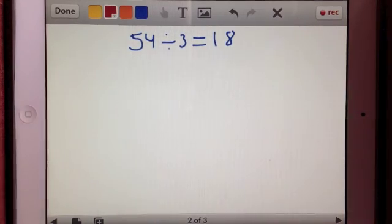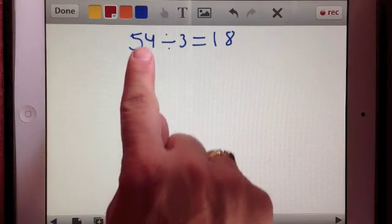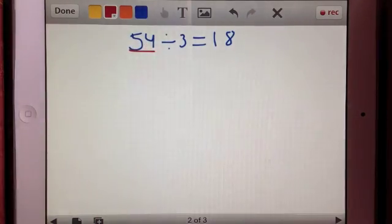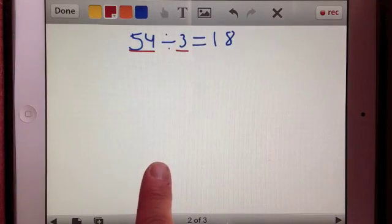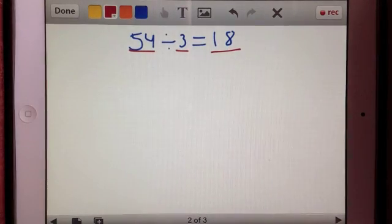So let's take this division problem. 54 divided by 3 equals 18. First of all, what does that mean? It means that if I can take the number 54 and divide it up into three equal parts I would get three parts of 18 or three groups of 18. That's one way you can look at it.